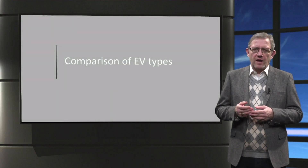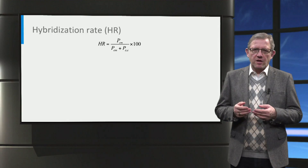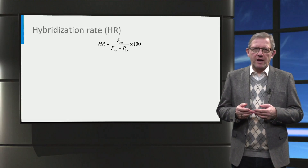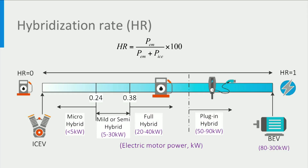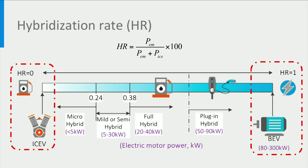Now that we know all electric vehicle types, let us compare them based on a factor called hybridization rate. The hybridization rate is a measure used to describe how strongly the powertrain is hybridized. This level is determined by the role that the electric motor has in the performance of the car. It is defined as a ratio of electric power to total power, described by the equation where PEM is the power provided by the electric machine and PICE is the power provided by the internal combustion engine. The classification for different values of hybridization rate is shown in a bar chart including typical values of the power rating of the electric motor. On both sides of this bar, the internal combustion vehicle hybridization rate is 0 and the battery electric vehicle hybridization rate is 1.